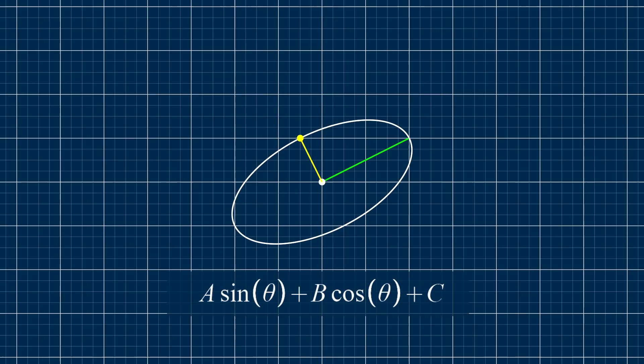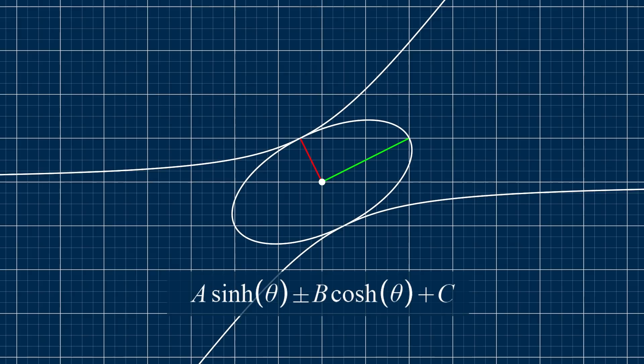If you want to draw a hyperbola, you can actually use the same formula. Just replace sine with sinh hyperbolic, and cosine with cosh hyperbolic. So if you ever wondered why it was called hyperbolic sine and cosine, now you know.